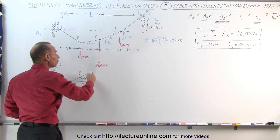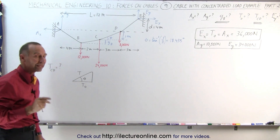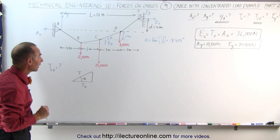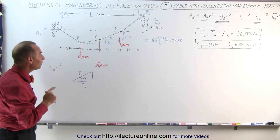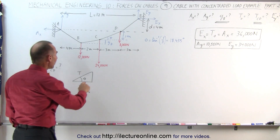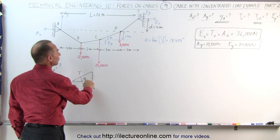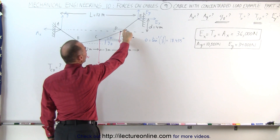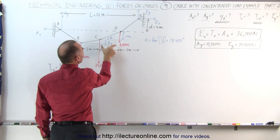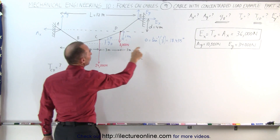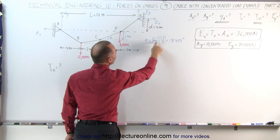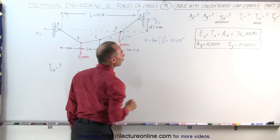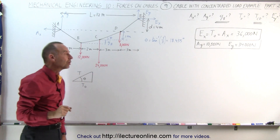I may not know the vertical force here, but that's quite all right. The reason is because I know what theta is equal to. Based on the geometry, this being 1 meter and this being 3 meters, we took the arctangent of that ratio, and we got 18.435 degrees.